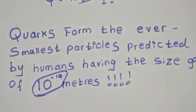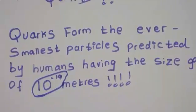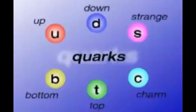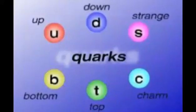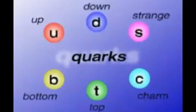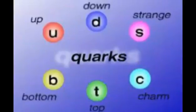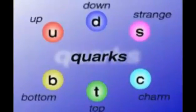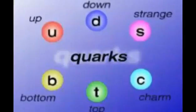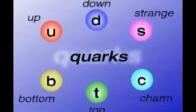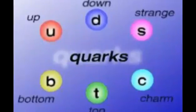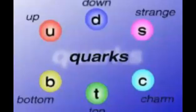They don't have a specific shape or size, but they do have categories which we're going to study right now. The names are: up quark, down quark, strange quark, charm quark, top quark, and bottom quark. It may sound strange, but these are their names. We're going to study their charges right now.